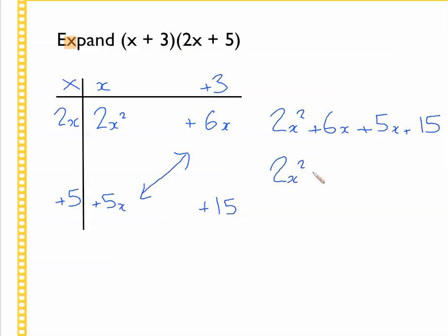So our answer is actually two x squared plus, and now we've got six x and we add five more of them, we've got eleven x plus fifteen and that is the answer to this question.